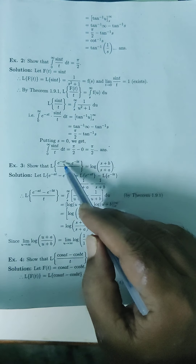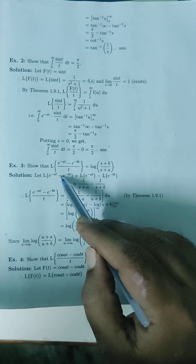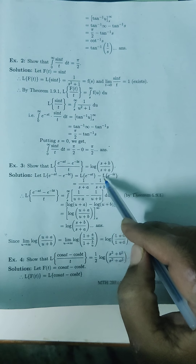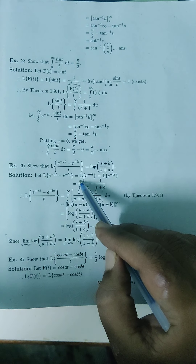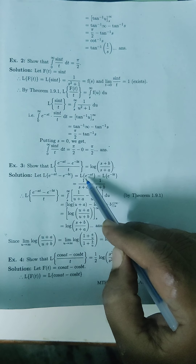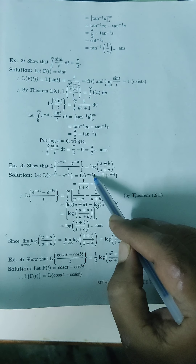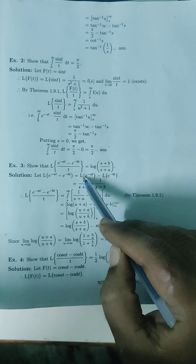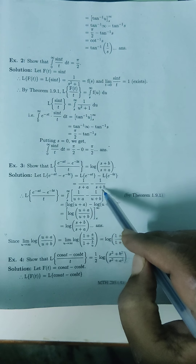Suppose the function is e(t). Laplace of (e^{-at} - e^{-bt}) by linearity property equals Laplace of e^{-at} minus Laplace of e^{-bt}. We know Laplace of e^{kt} = 1/(s-k); here the sign is negative. So Laplace of e^{-at} = 1/(s+a) and Laplace of e^{-bt} = 1/(s+b). Therefore F(s) = 1/(s+a) - 1/(s+b).